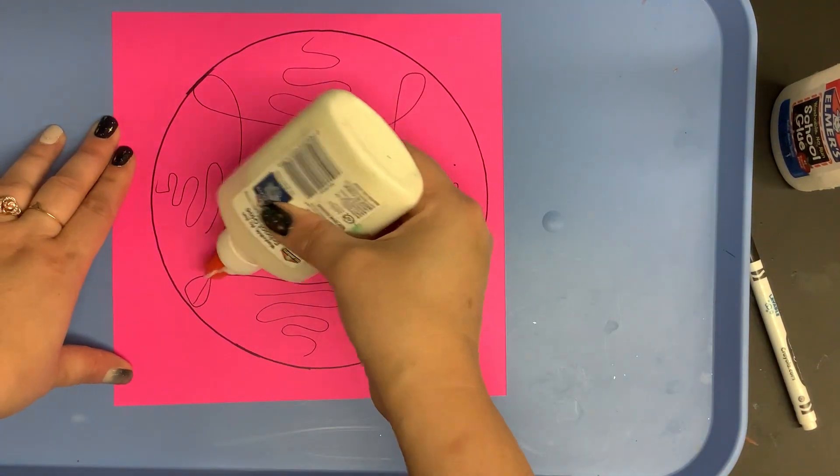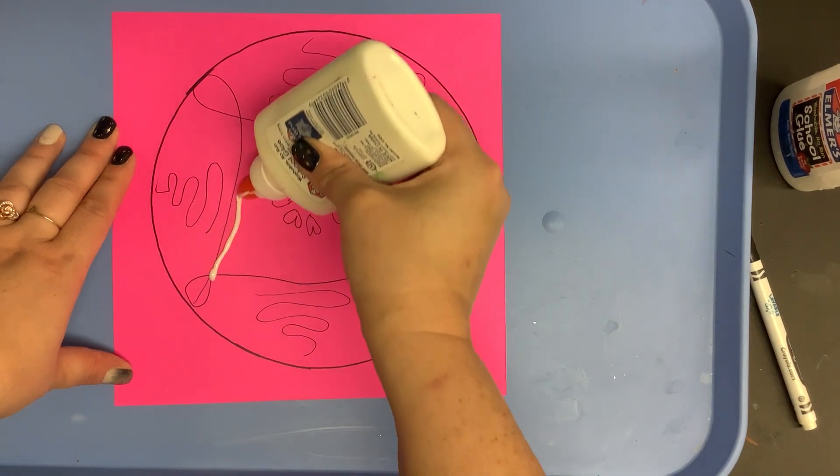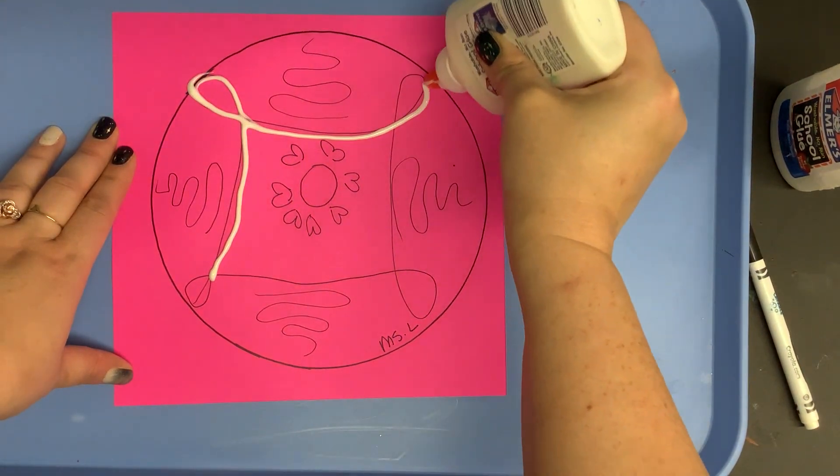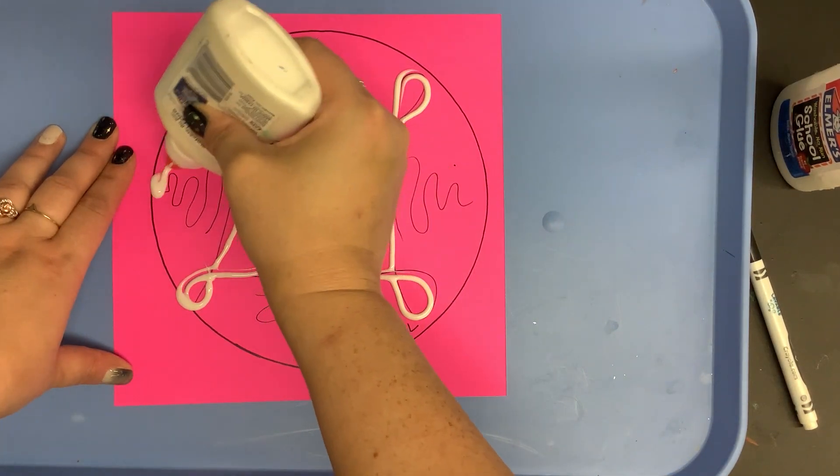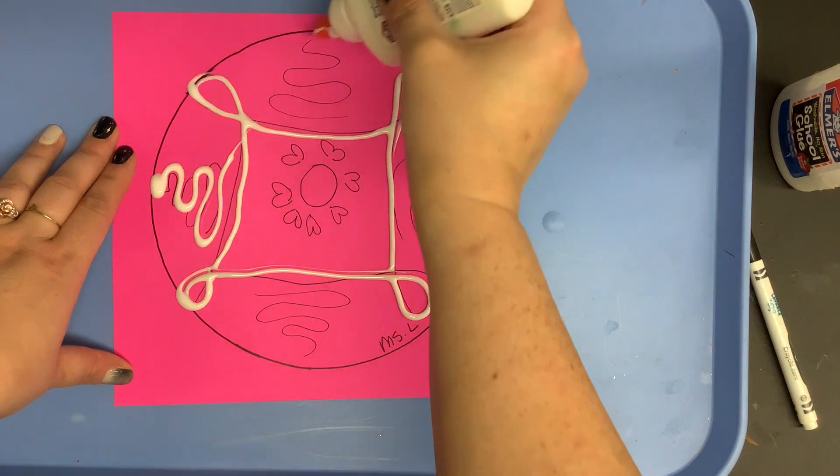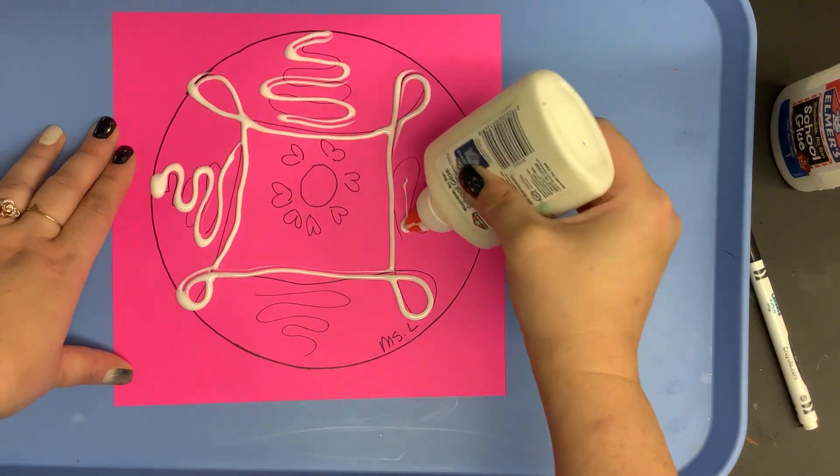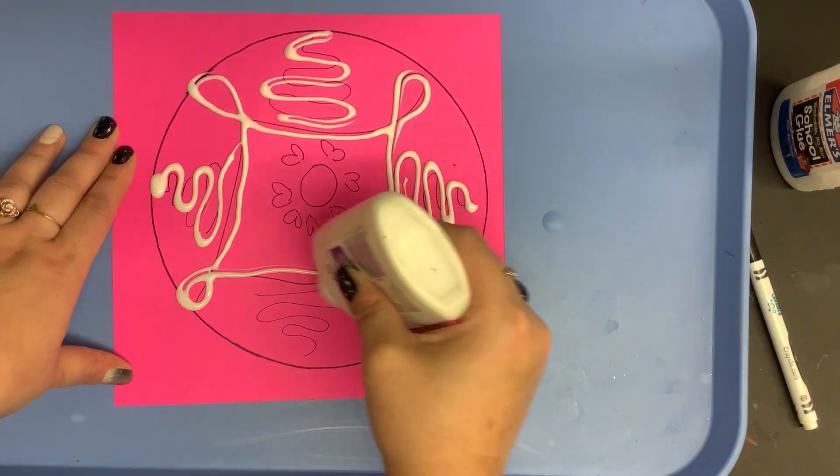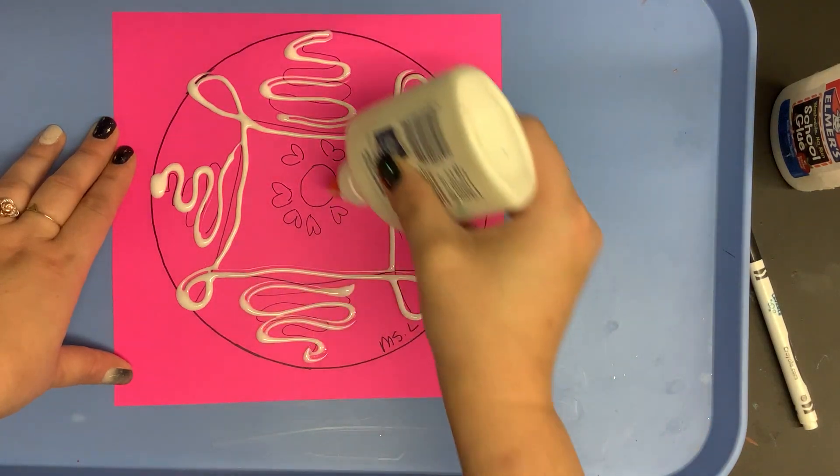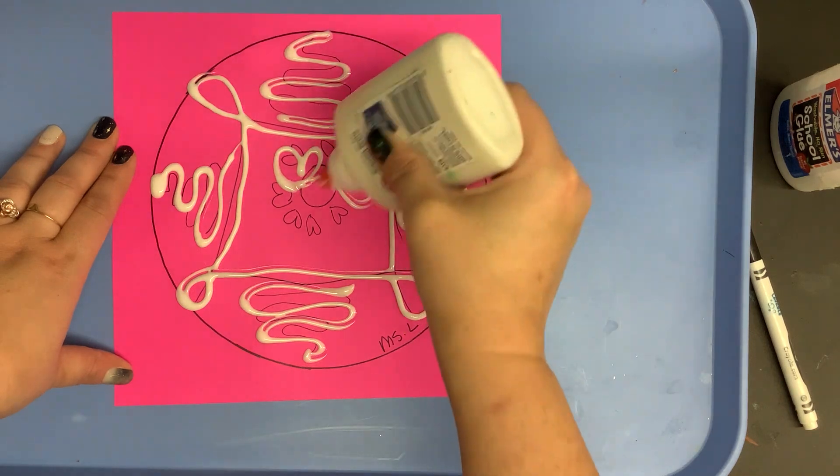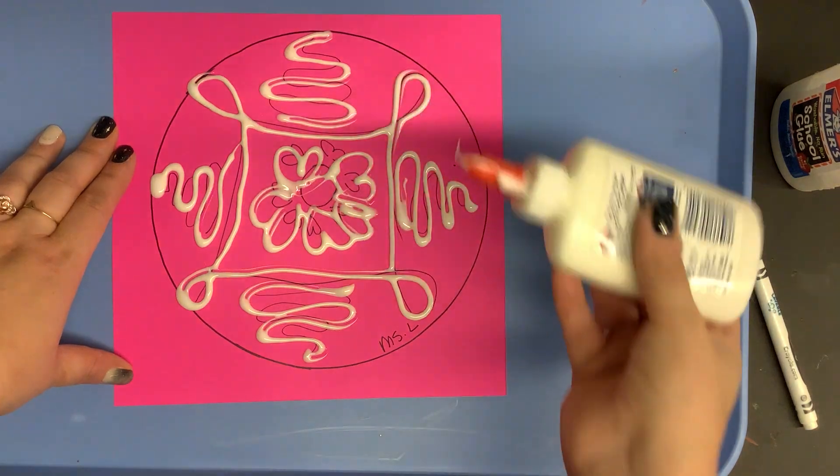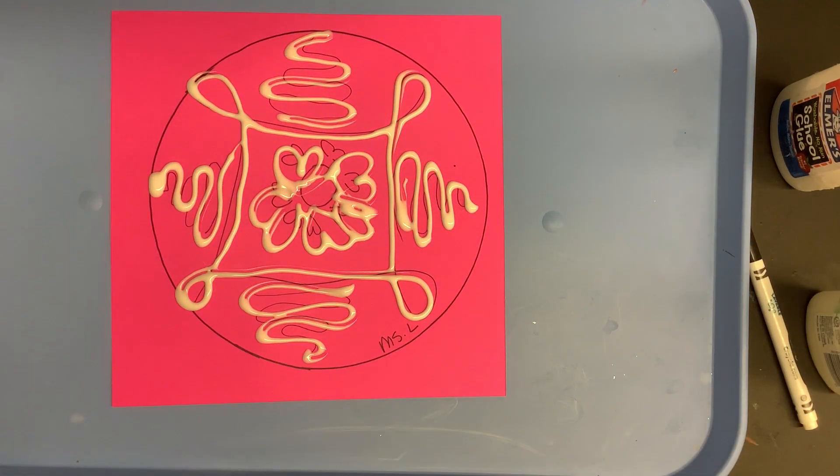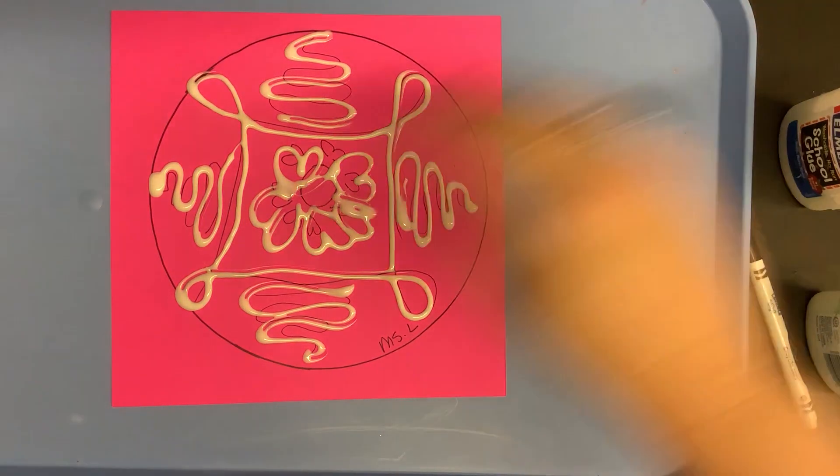So I'm gonna take this and I'm literally just going to draw with my glue bottle. And since I drew a design on here already I'm just gonna trace it. And I am going a little off script here with my hearts because I drew those way too small for my glue. So let that be a lesson to you. You don't want it to be way too teeny tiny with your glue.